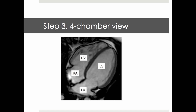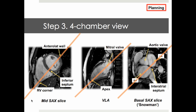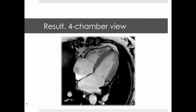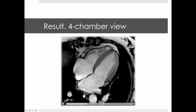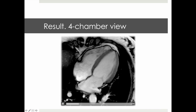The 4-chamber view is defined by visualization of 4 chambers: left atrium, left ventricle, right ventricle and right atrium. In the first image — the mid short axis slice — we connect the right ventricular corner, inferior septum, as well as anterolateral wall. The VLA serves for definition of the long axis from apex to mid of the mitral valve. The SNOWMAN view helps aim for the interatrial septum, avoiding cutting into the aortic valve. The resulting 4-chamber view allows visualization of both ventricles and atria, interventricular and interatrial septum, mitral valve and tricuspid valve.